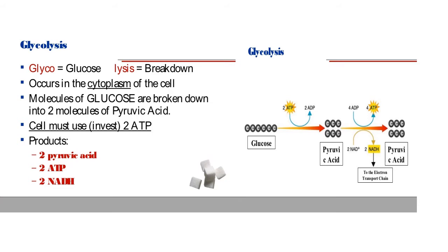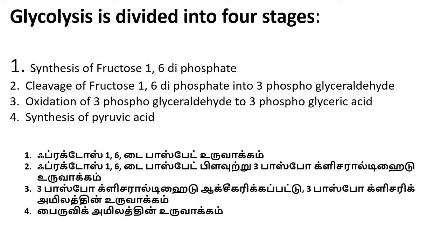We can study glycolysis in four stages. The first step is the synthesis of fructose-1,6-bisphosphate from glucose. The second step is the cleavage of fructose-1,6-bisphosphate into 3-carbon compounds — specifically into 3-phosphoglyceraldehyde (G3P). Fructose-1,6-bisphosphate breaks down to give rise to 3-phosphoglyceraldehyde.